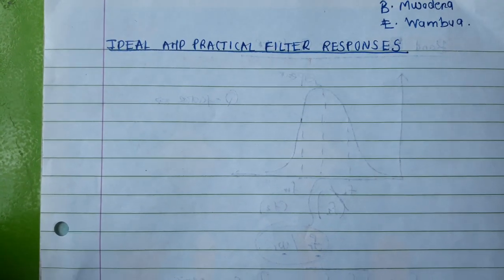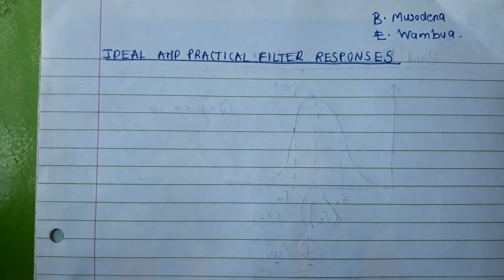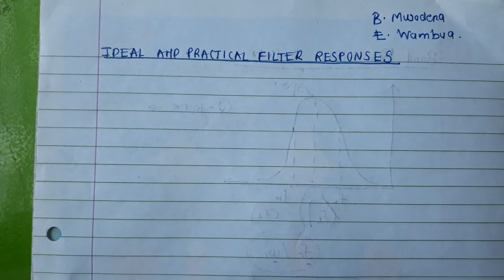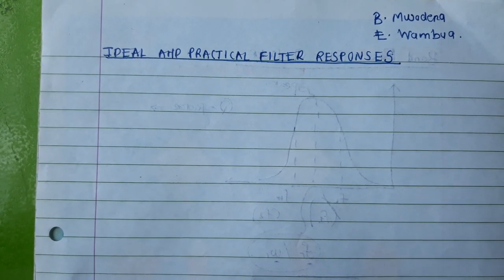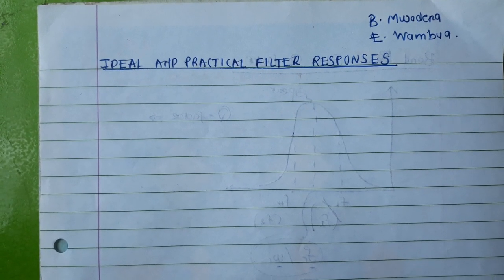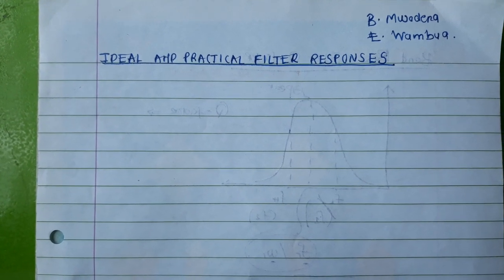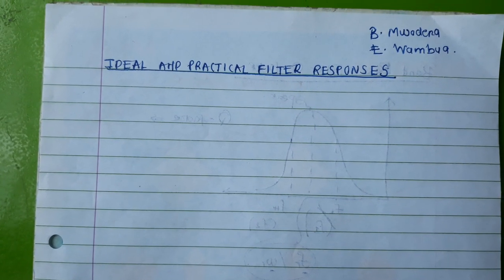Basically, what this means is that all the responses that we've done from the band pass, high pass, low pass, and the notch responses can be categorized into either ideal responses or practical responses.